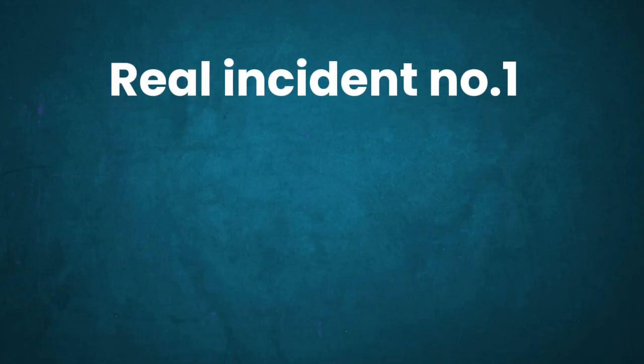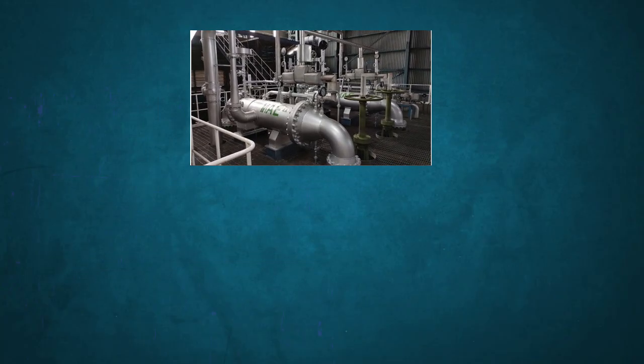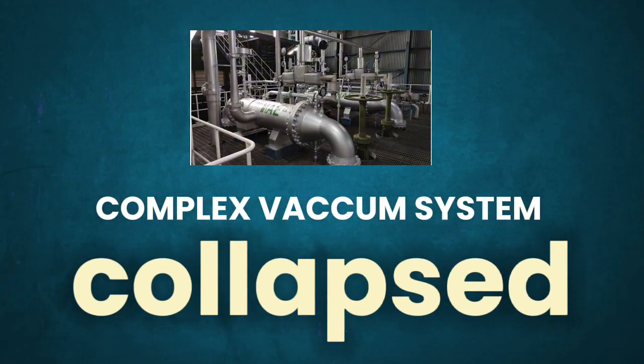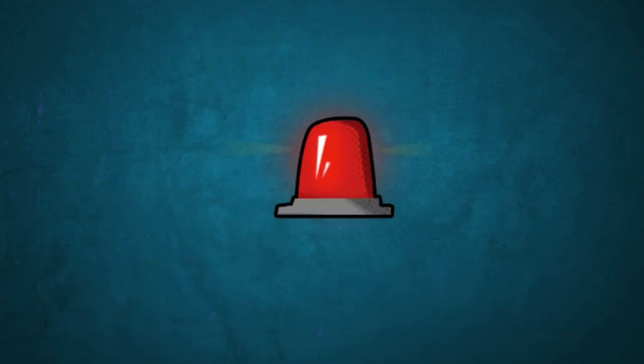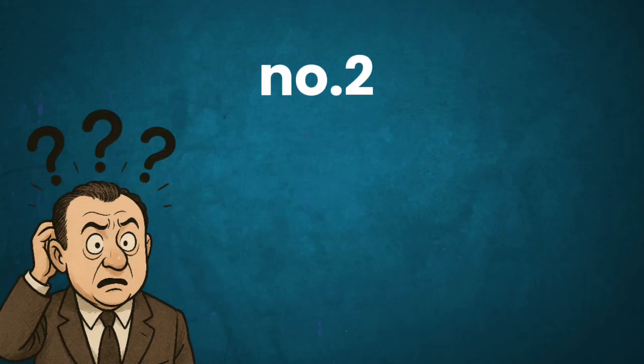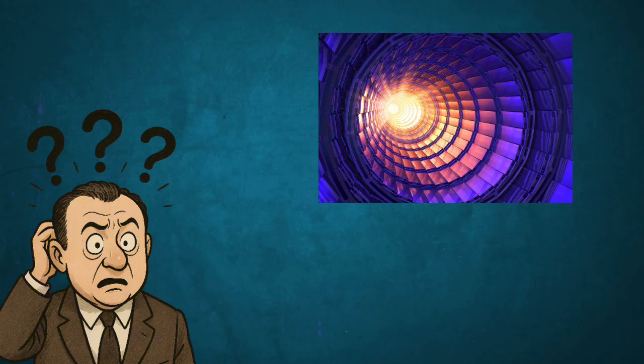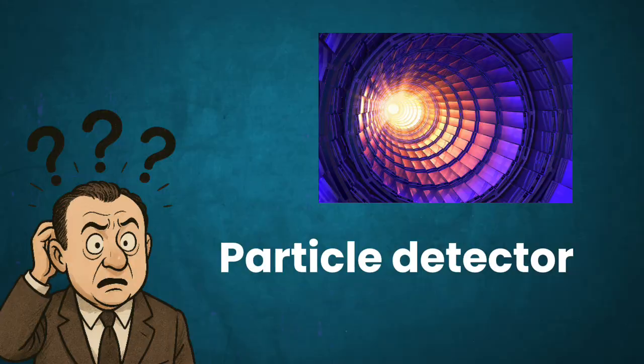Real incident number one: In one lab, a complex vacuum system collapsed moments after Pauli walked in. No explanation, no warning. Number two: In another case, Pauli simply entered a room, and a particle detector stopped working.